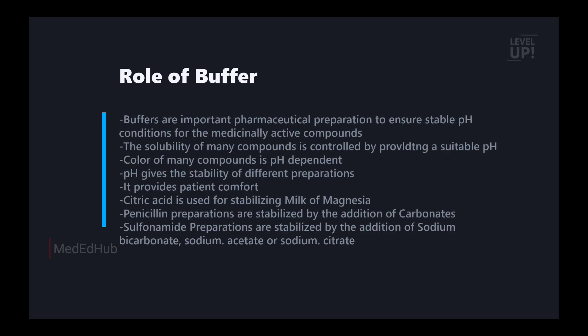Next, we'll talk about the role of buffers. In a pharmaceutical preparation, the buffer maintains a stable pH for the medically active compound. If we have to maintain the pH, we have to maintain the buffer. It also helps with solubility — we have to maintain the pH and buffer rewards. The color of the compound depends on the pH. The pH is stable in different preparations, and we use the buffer to maintain it. It provides patient comfort. For example, citric acid is used; we use milk of magnesia as a stabilizer. In pencil preparations, we use carbonate addition as a stabilizer. In sulfonamide preparations, we use sodium bicarbonate and sodium acid as a stabilizer.